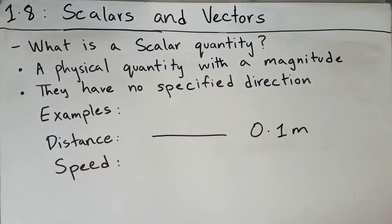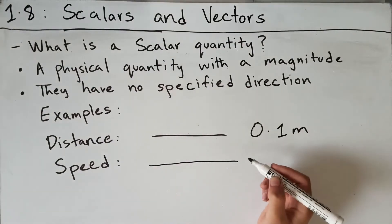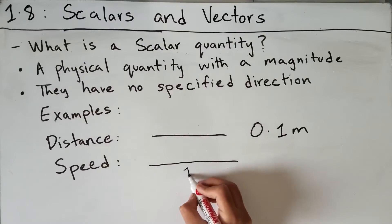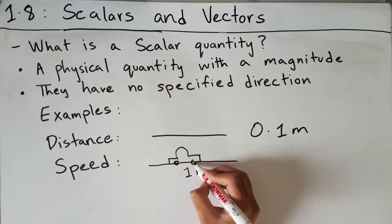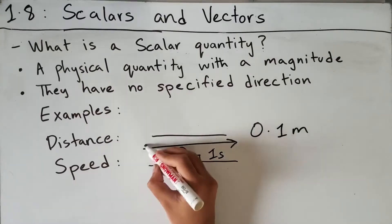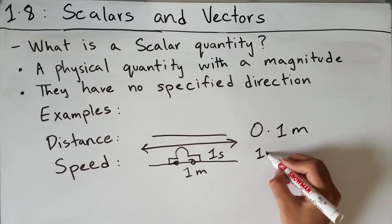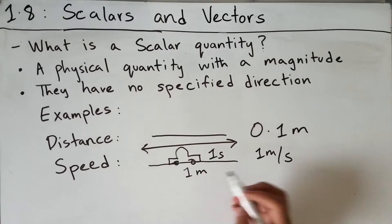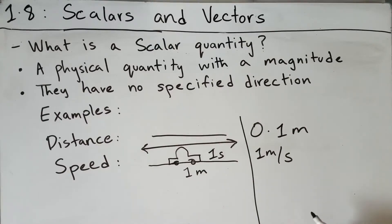Another scalar is speed, which is simply the rate at which you cover some distance. So let's say this was 1 meter, and this car took 1 second to cover it — then the speed would be 1 meter per second.